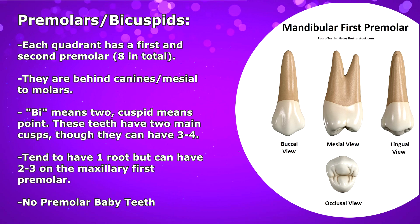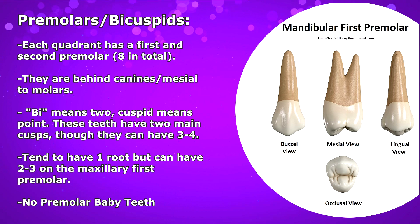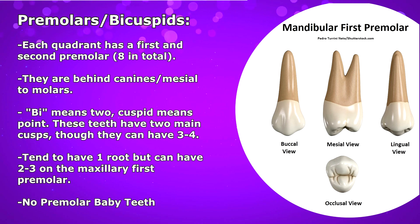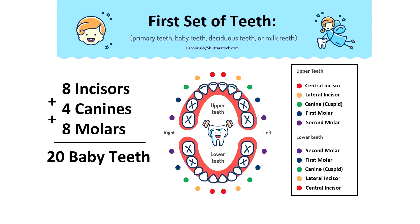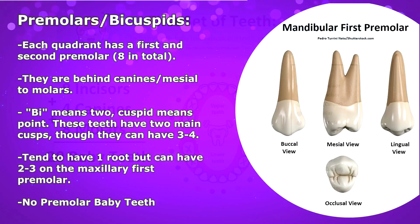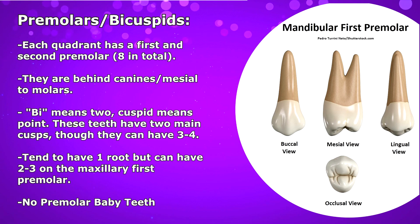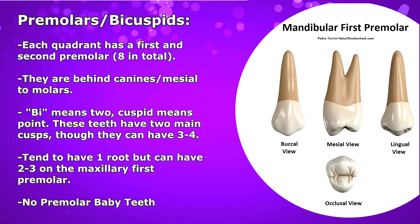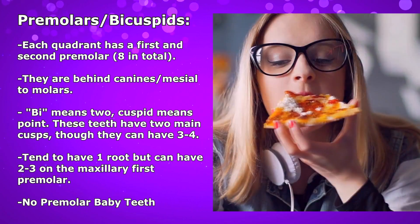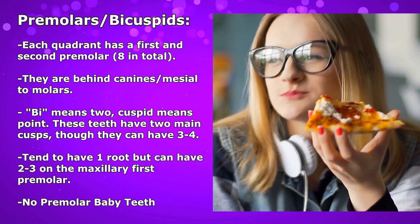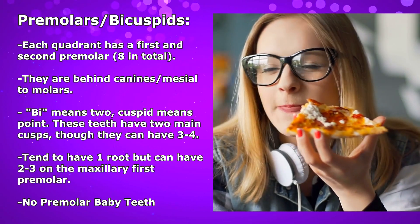And premolars tend to have one root, but they can have two or even three roots on the maxillary first premolar. And you have to remember that the baby teeth are not going to have any premolars in their dentition. These only erupt with the permanent dentition and you have four in each arch, which makes eight bicuspids or premolars in total. The main function of the premolars is to really grind up food.